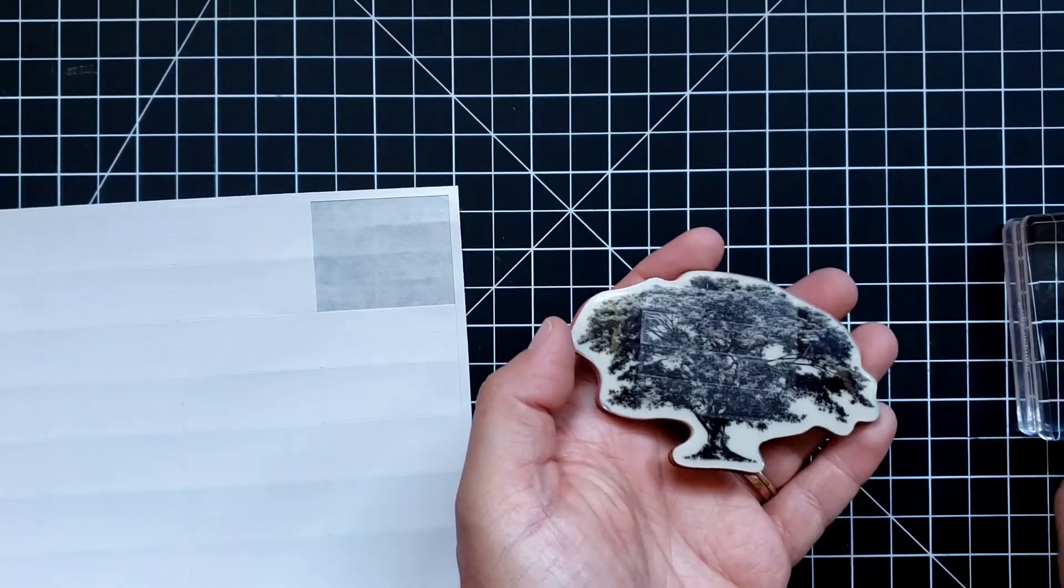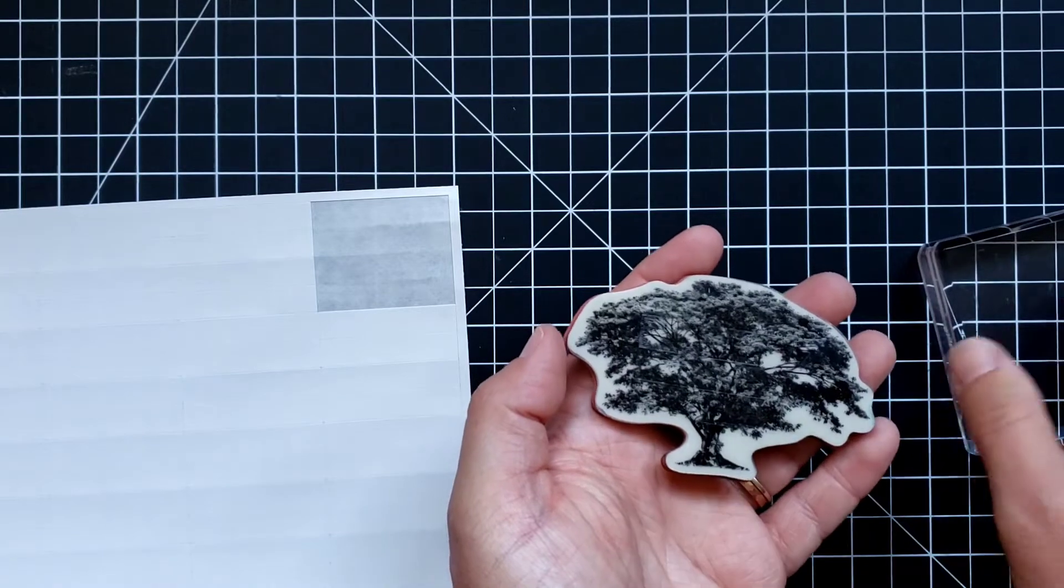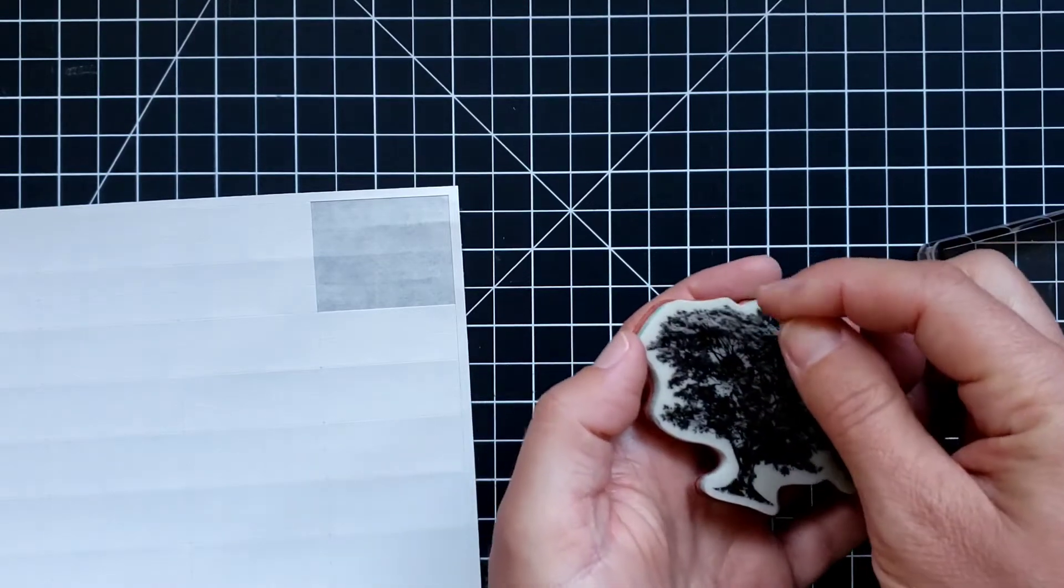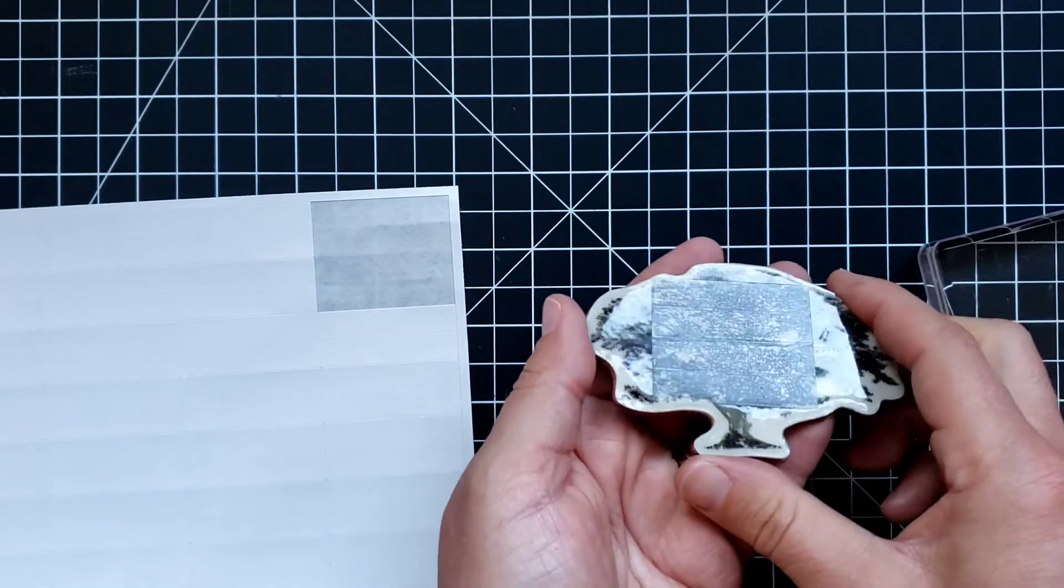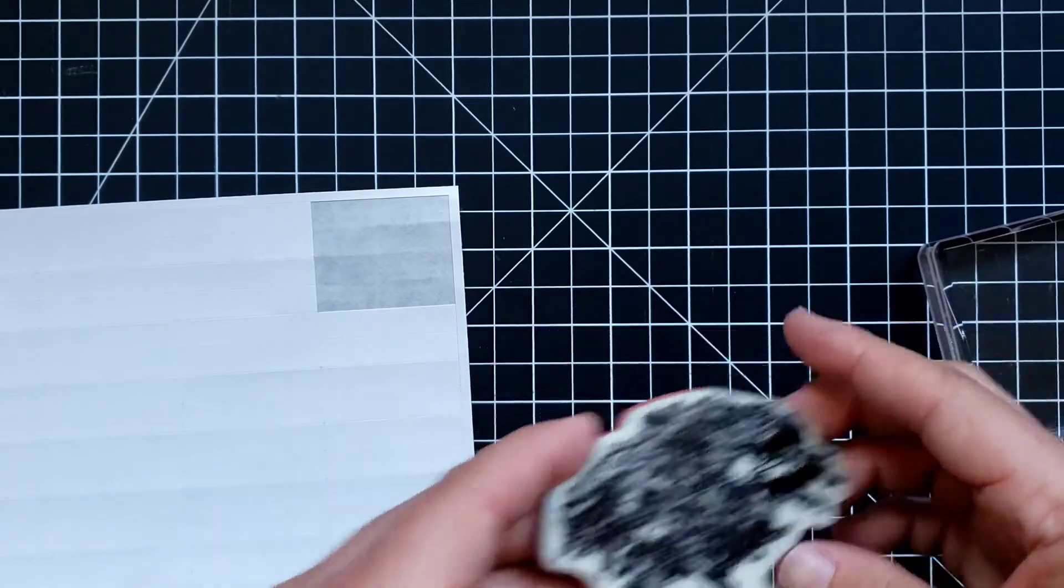And what I have found is I really prefer that the edges of the cling adhesive be inside of the edges of the stamp. If they stick out the outside, that cling adhesive wants to cling to my block when I pull it off and actually come off of the stamp. So keep it inside of the edges of the stamp.